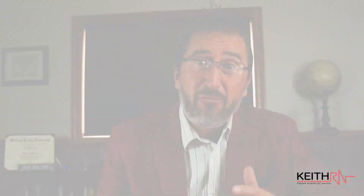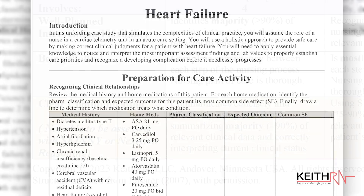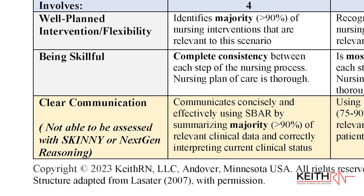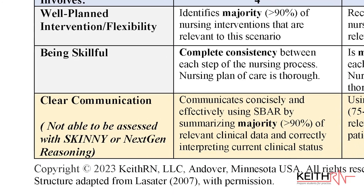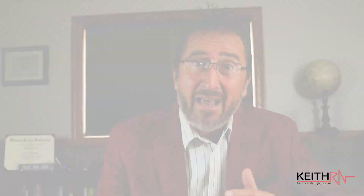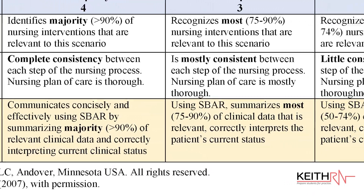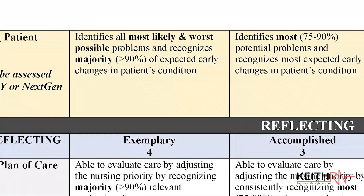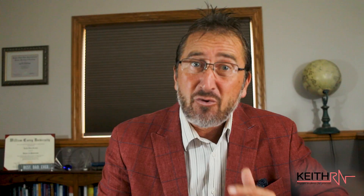If the more concise Next Gen or skinny reasoning level is used, the clear communication and recognizing patient problem subcategories under the responding process cannot be assessed, since these questions are not included in these shorter levels. These subcategories are highlighted in light orange on the rubric as a reminder. As a result, the scoring will be slightly different.